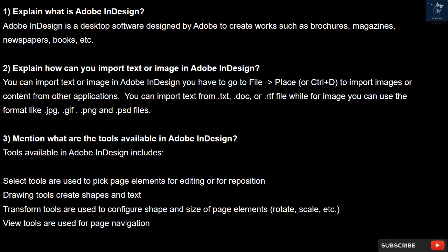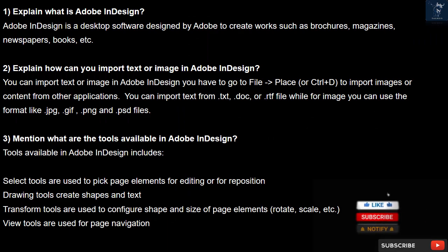Question 2. Explain how can you import text or image in Adobe InDesign? You can import text or image in Adobe InDesign by going to File > Place or Ctrl+D to import images or content from other applications. You can import text from .txt, .doc, or .rtf files, while for images you can use formats like .jpg, .gif, .png, and .psd files.